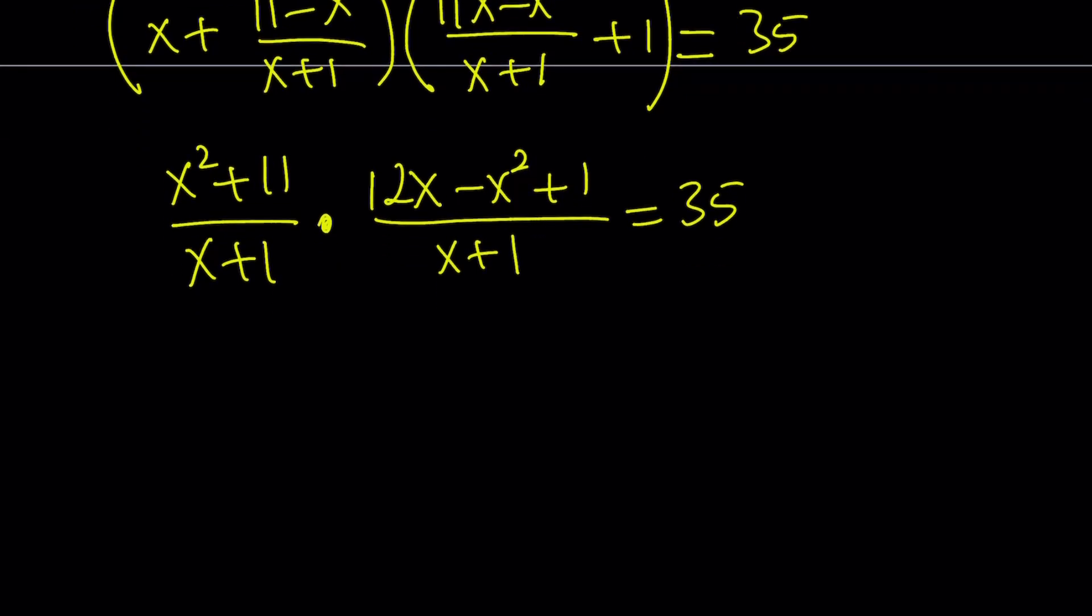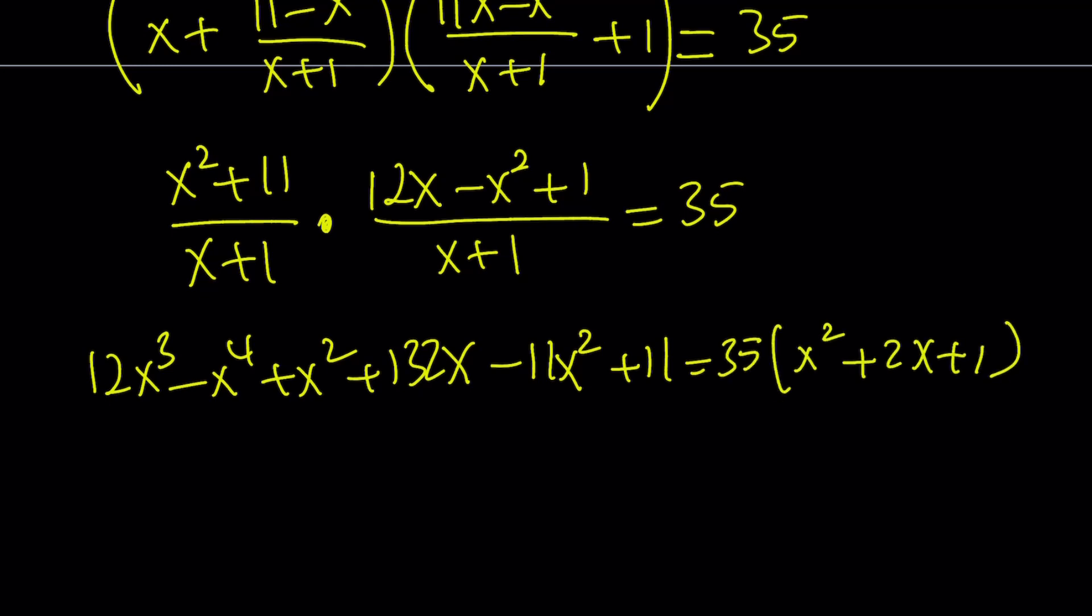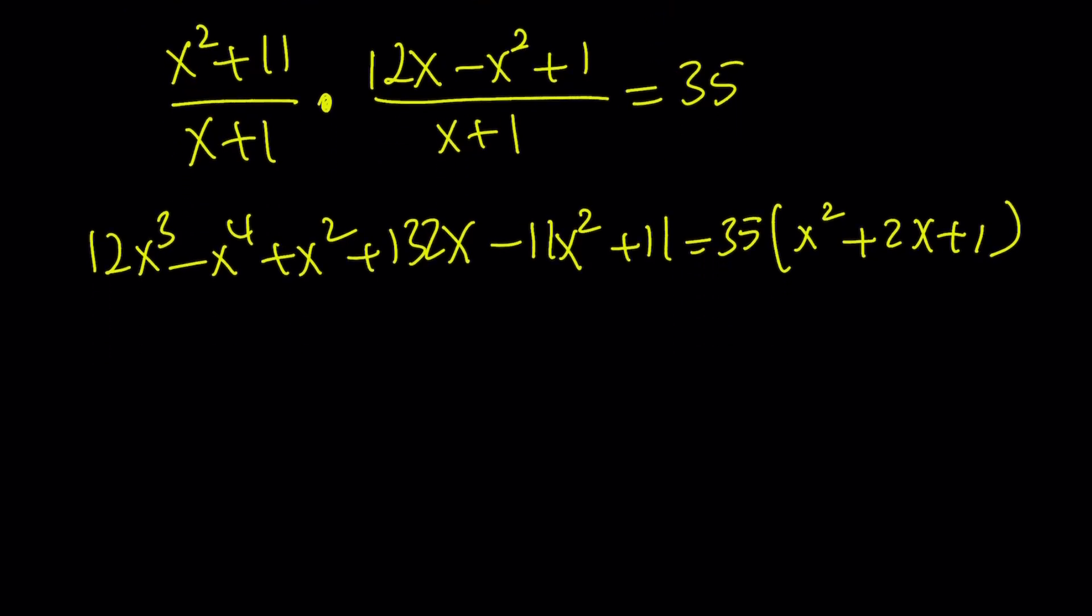Now, after multiplying everything together and cross-multiplying, multiplying the top and cross-multiplying, we get the following: 12x³ - x⁴ + x² + 132x - 11x² + 11 = 35(x²+2x+1), which is (x+1)² quantity squared. And if you distribute everything and rearrange the terms, combine like terms,